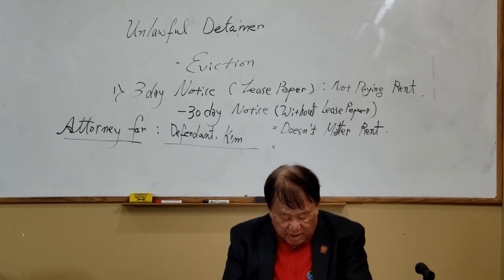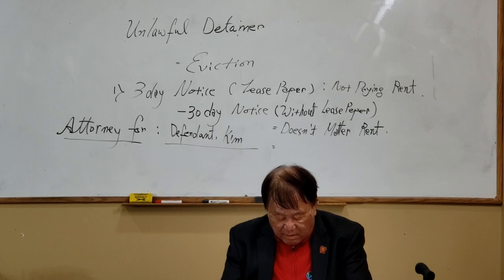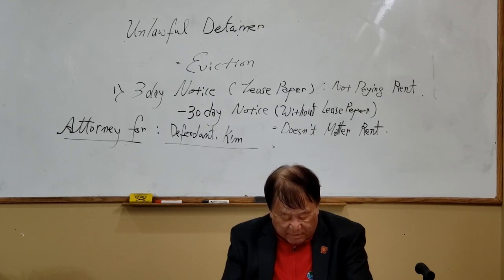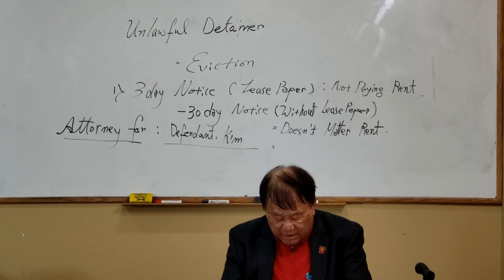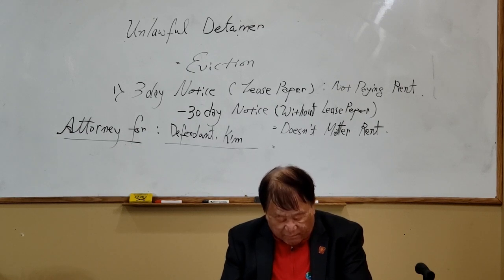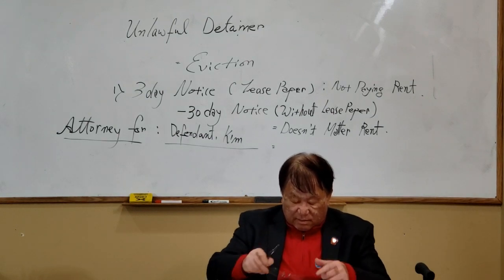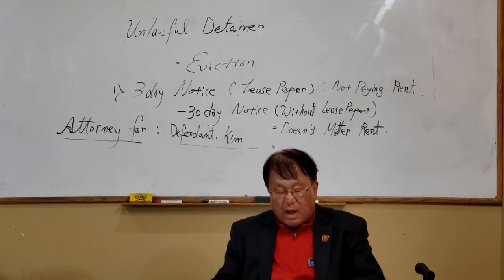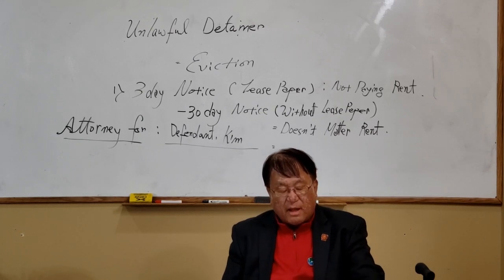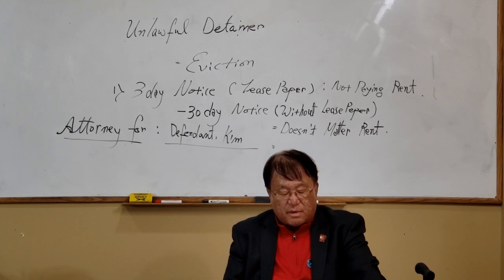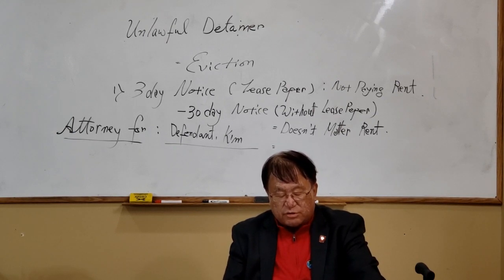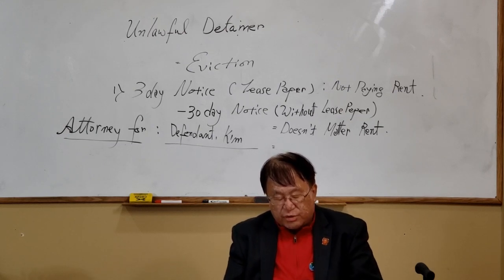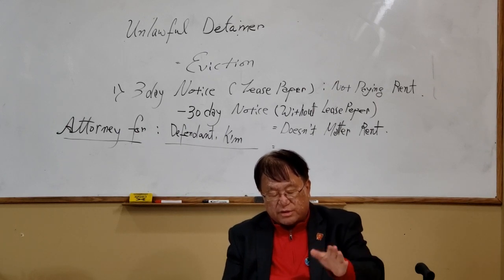Verification: I am the defendant in this proceeding and have read this answer. I declare under penalty of perjury under the laws of the state of California that the foregoing is true and correct. Date and name — I sign on the right side. This is all. This page is complete, and then go to the same court at 111 North Hill Street. Just file this one or two page paper — the court stamp it, that's all.